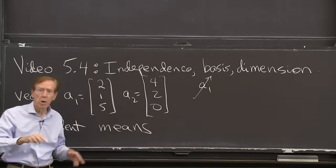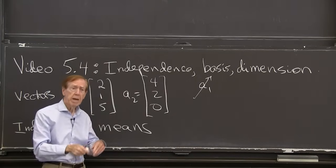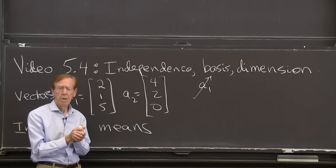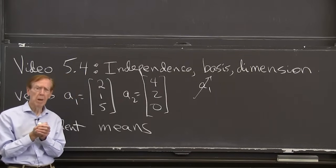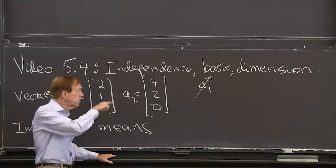Now, is a2 on the same line? If a2 is on the same line, then it would be dependent. The two vectors would be dependent if they're on the same line. But this one is not on that line. It's 4,2,0.